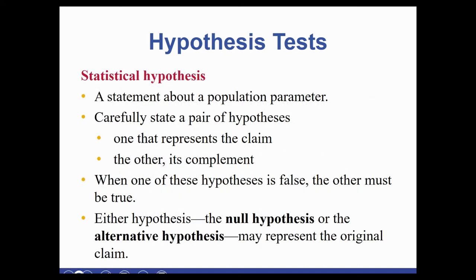A statistical hypothesis is where you state what we think is happening. There's actually a pair of hypotheses — two pieces. One is our claim, and the other is what's called the complement. So if it's not 50 miles per gallon, then maybe it's something smaller or something bigger. Our claim would be either it is 50 or it is not 50. With equal signs, you have equal and not equal that complement each other. If it is less than for one, it's greater than or equal for the other — these will always be complements, because if one is false, the other has to be true.